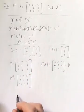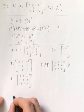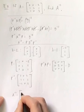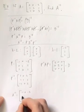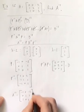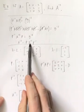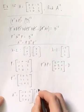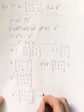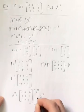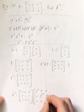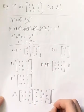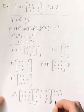So based on what we did up here, we could say that A to the 13th is P, I'll go ahead and put that right here, D to the 13th. Now again, here's D. So we're just going to raise 2, 2, and 1 to the 13th powers and leave all of these as zeros. And then we'll put P inverse on the end.